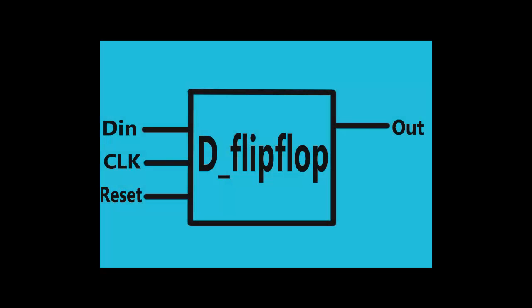Hello guys, today we are going to learn how to build a D flip-flop using Verilog code. As you can see, a D flip-flop has three inputs: din, clock, and reset. And it has a single output which is out.